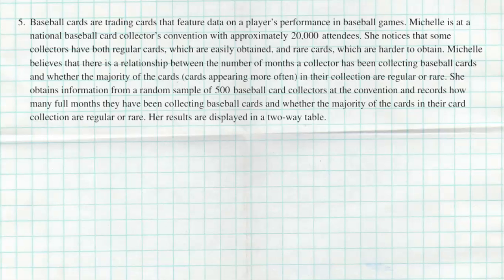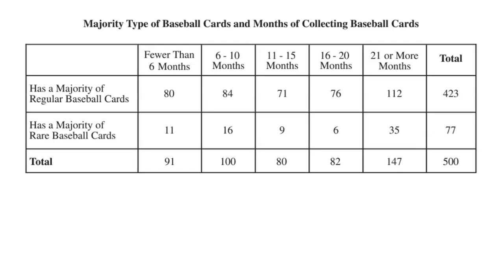Baseball cards are trading cards that feature data on a player's performance in baseball games. Michelle is at a National Baseball Collectors Convention with approximately 20,000 attendees. She notices that some collectors have both regular cards, which are easily obtained, and rare cards, which are harder to obtain. Michelle believes there's a relationship between the number of months a collector has been collecting baseball cards and whether the majority of cards in their collection are regular or rare. She obtains information from a random sample of 500 baseball card collectors at the convention and records how many months they've been collecting and whether the majority of their cards are regular or rare. Here are the results in a two-way table.